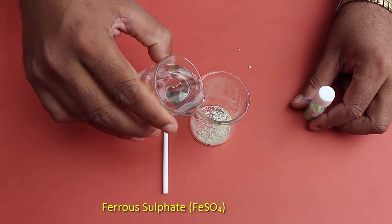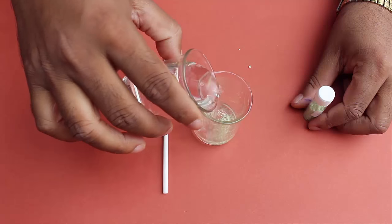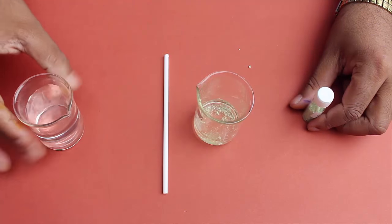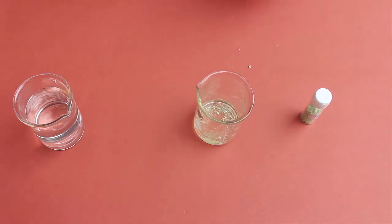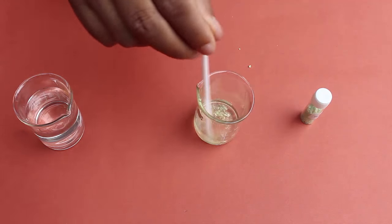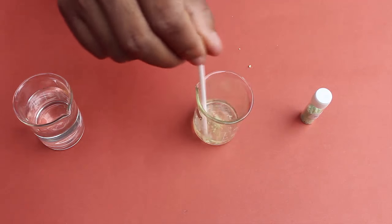And with the stirrer we have to stir it such that we can get a very clean solution of ferrous sulphate.